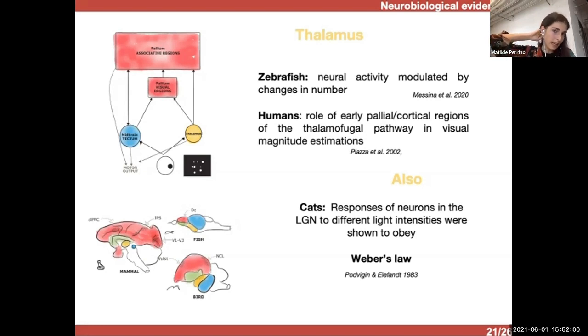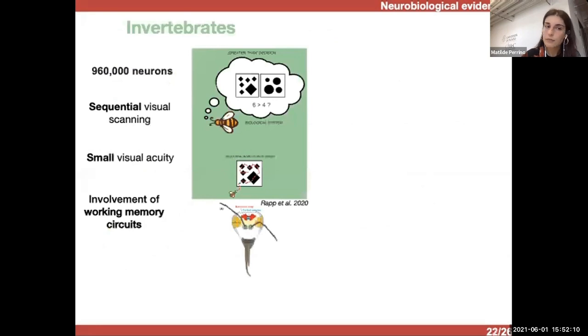And also, this area has been shown to respond to the Weber law in cats. So, there are neurons in the lateral geniculate nucleus that respond to different light intensities obeying to the Weber law. And also, we know that very small brains in the order of one million neurons can discriminate numerosity. So, it seems plausible that small circuits or restrained computational resources are sufficient to accomplish this type of quantity computation.